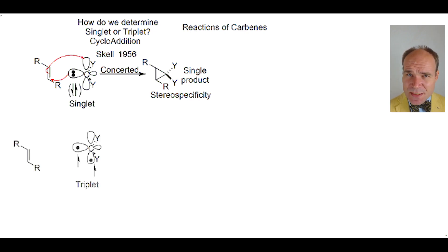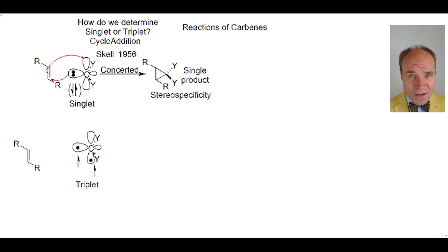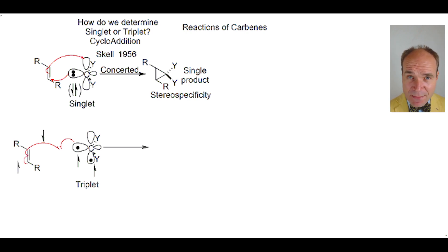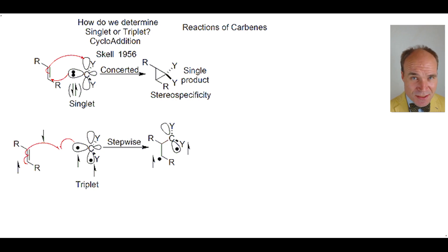When a triplet carbene reacts with the alkene, the outcome is different. The triplet has two electrons that have the same electron spin. One of these electrons forms a bond with an electron of the opposite spin in the pi bond of the alkene. Only one bond is formed at this stage, thus the reaction is stepwise and not concerted.